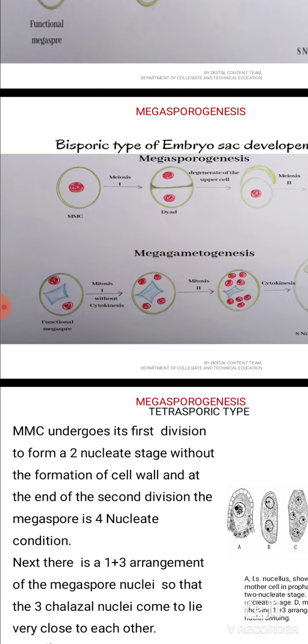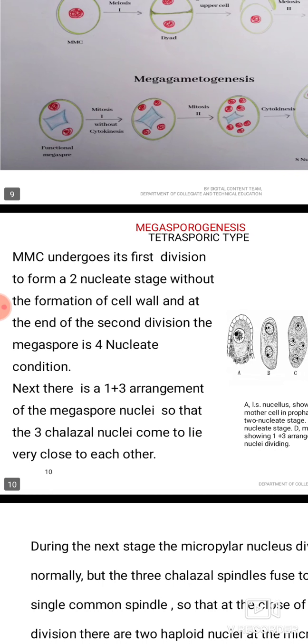Coming to the tetrasporic type, also known as the Fritillaria type. Here the megaspore mother cell undergoes its first division to form a two-nucleate stage without the formation of a cell wall, and at the end of the second division the megaspore is in a four-nucleate condition. Next there is a one-plus-three arrangement of megaspore nuclei, so that the three chalazal nuclei come to lie very close to each other.